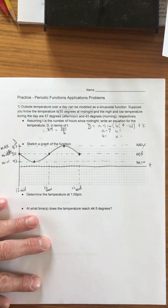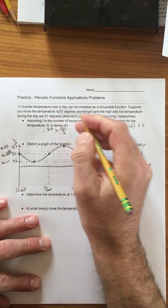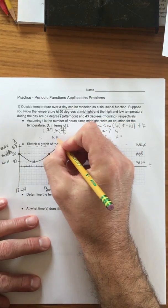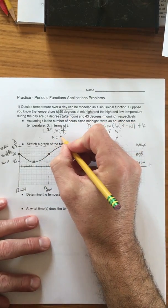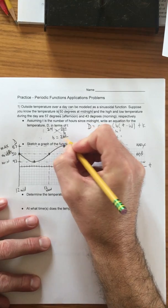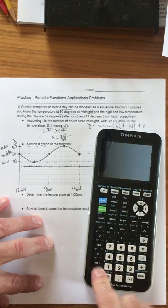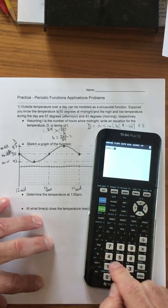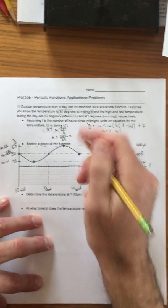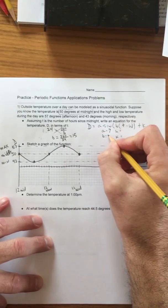So what we're going to do is we're going to cross-multiply and solve. I'm just going to take some shortcuts, but you can do the workout if you want. It'll end up 360 divided by 24. It comes out 15. So that's our B value.